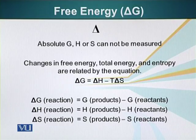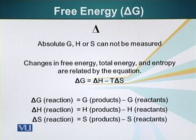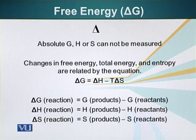All processes in which the total energy of the system goes from a higher value to a lower value will result in a negative delta G — those are the favorable processes. All processes which go from order to disorder will also contribute to a negative delta G. This means all systems tend to go from a higher energy state to a lower energy state, and from order to disorder.